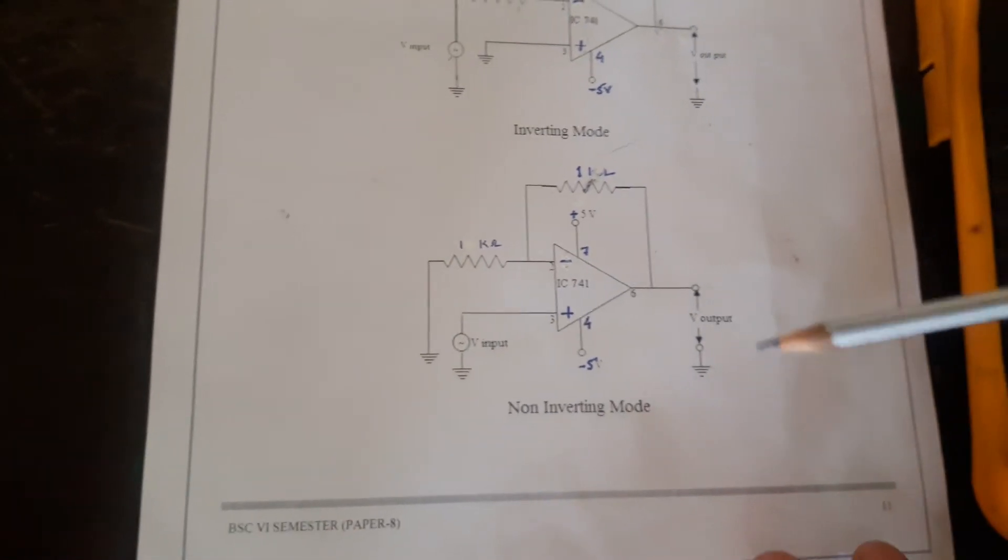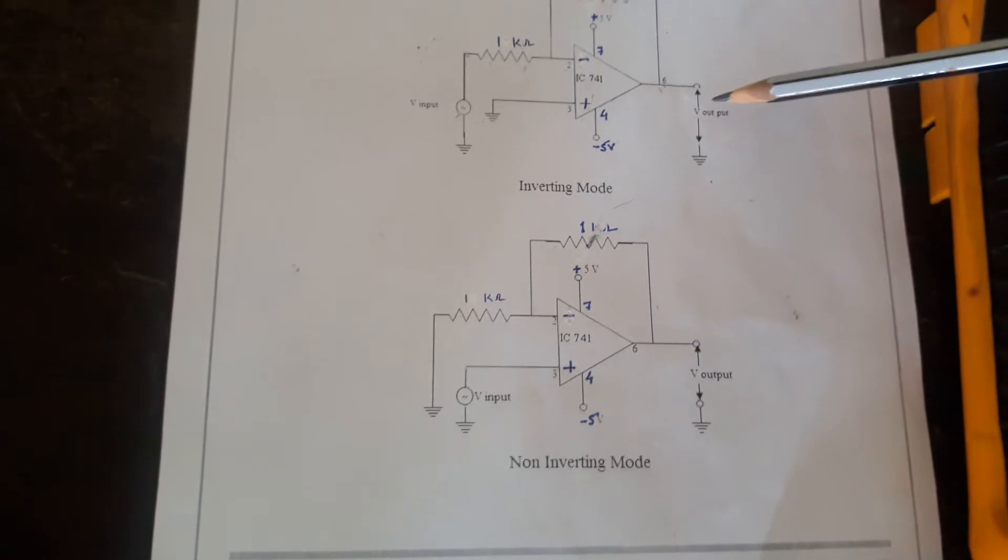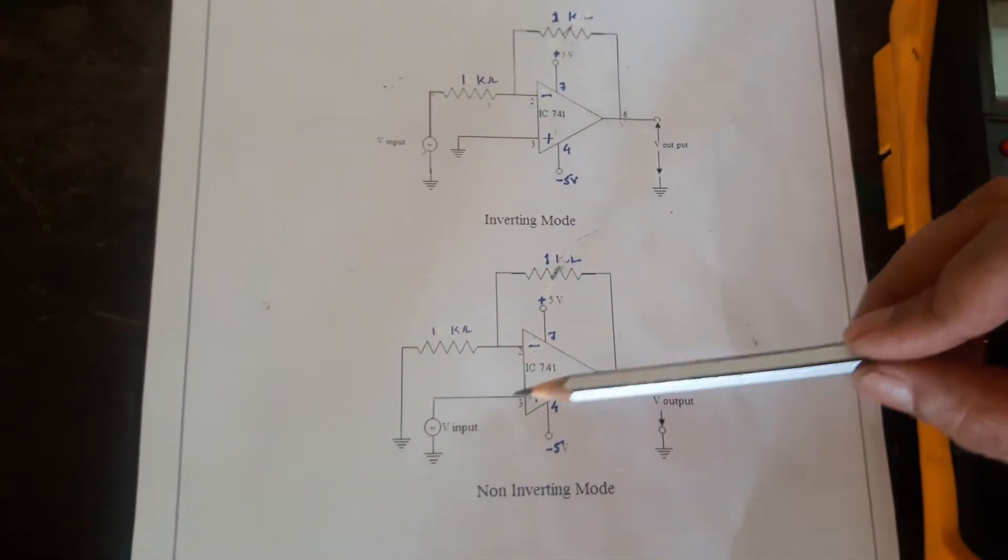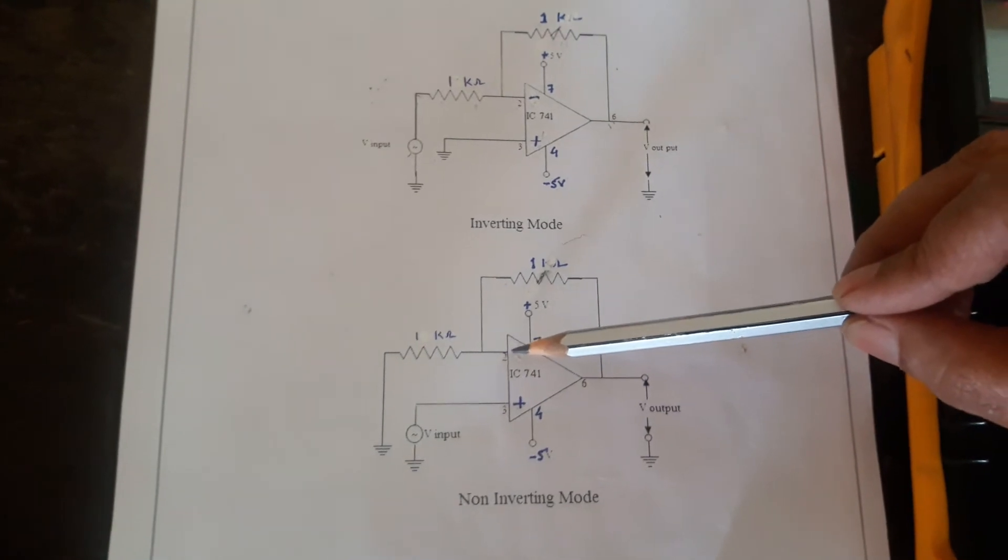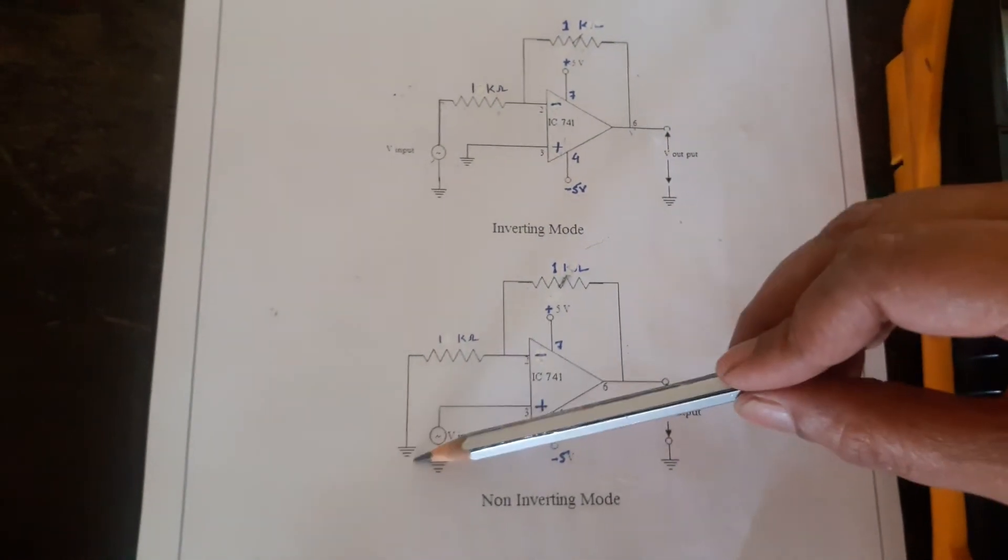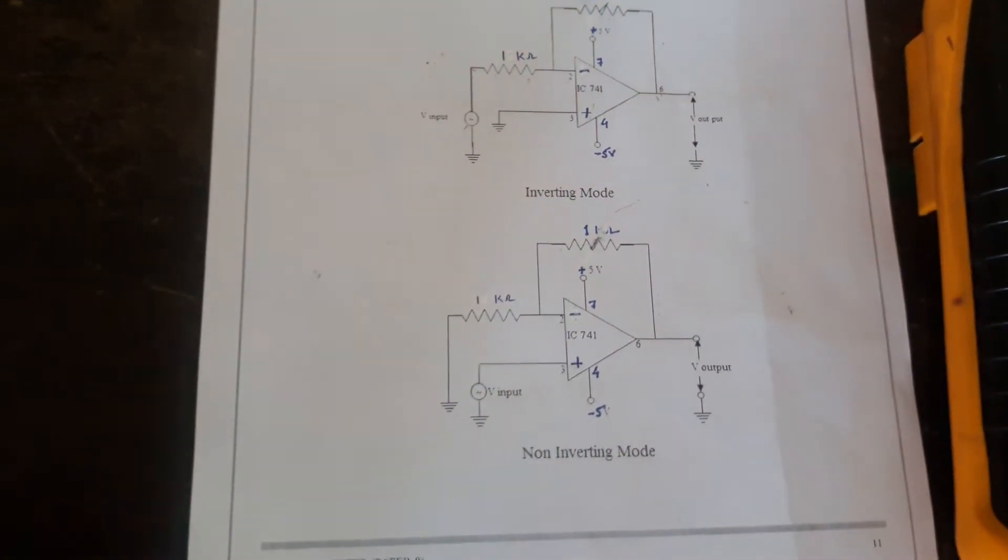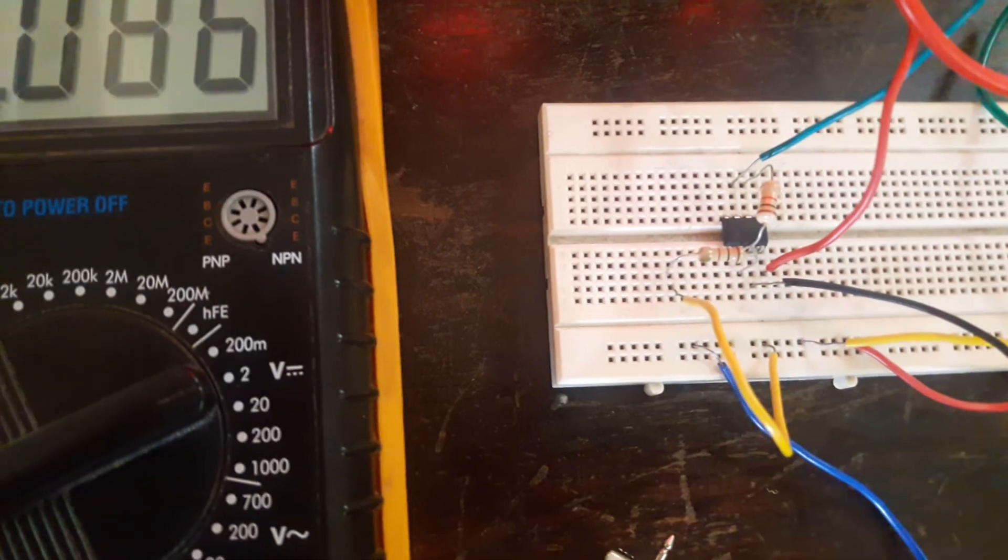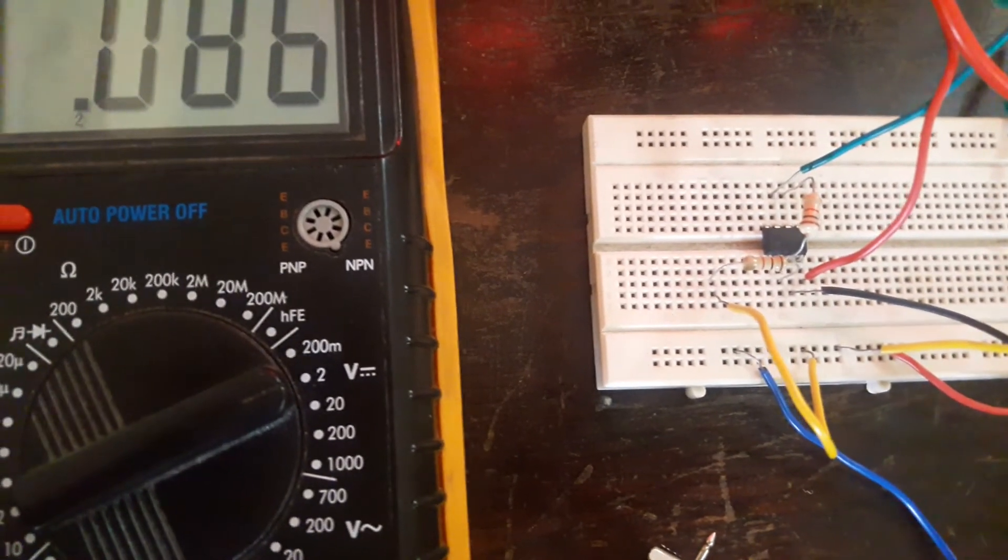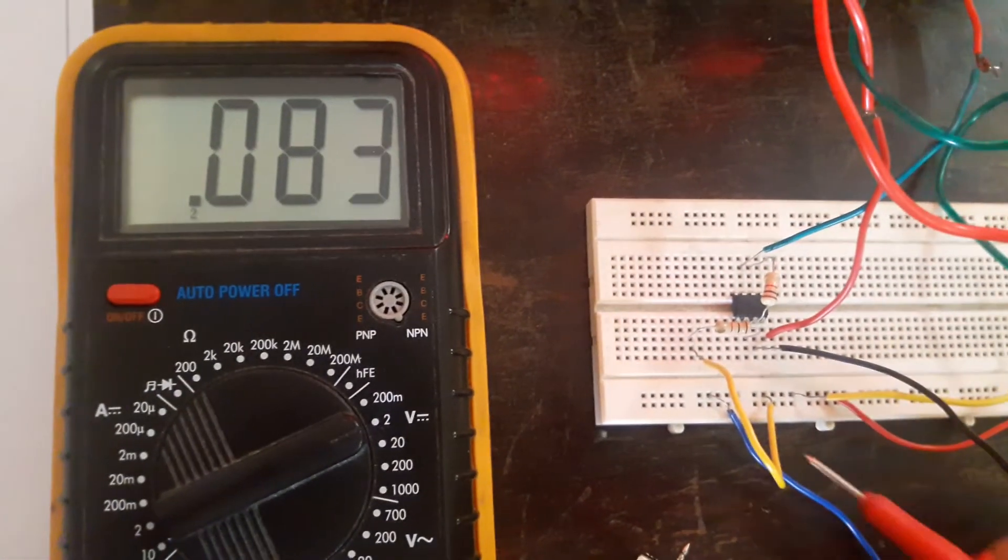Non-inverting mode connections just similar to this one. The only difference is the input source now it is given to pin number 3 and the input resistance should be grounded here. I have interchanged the connection in my breadboard. In the same procedure we have to take readings both input and output.